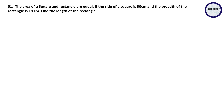The first question: the area of a square and rectangle are equal. We are given that the side of a square is 30 centimeters and the breadth of the rectangle is 18 centimeters. The area of the square and the area of the rectangle are equal, and we have to find the length of the rectangle.